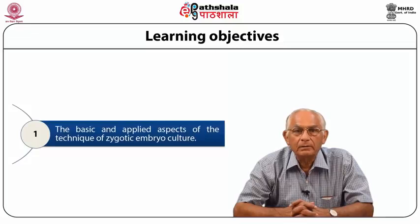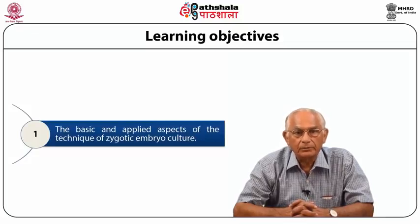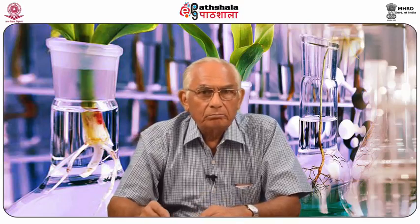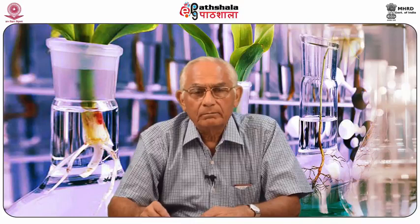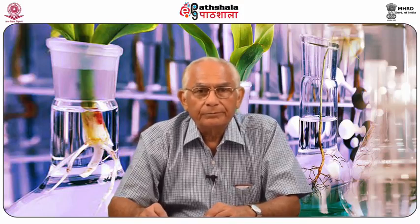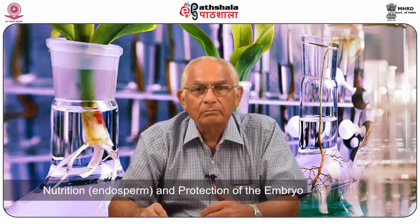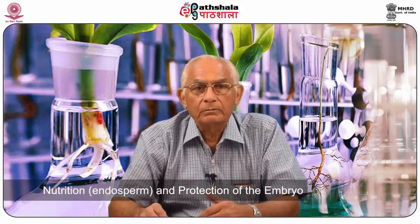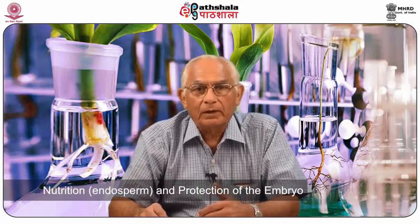Embryo is the most important component of a seed. Other tissues of the seed are subservient to the embryo. They either serve as a source of nutrition, such as the endosperm tissue, or provide protection to the embryo, such as the seed coat.